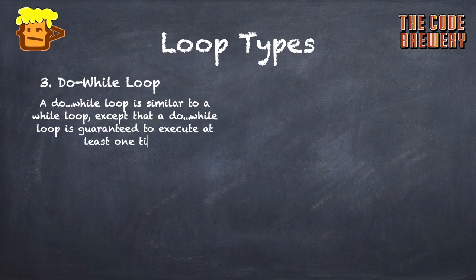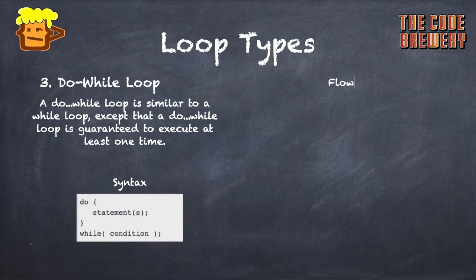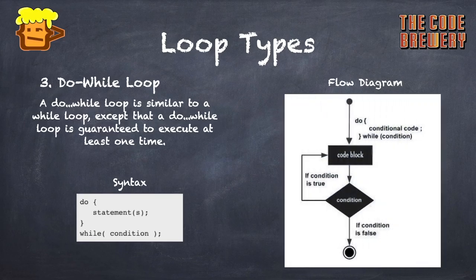The third type of loop is the do-while loop. A do-while loop is similar to a while loop except that it is guaranteed to execute at least one time. As we can see from the syntax, 'do' is written at the start with no condition, then we write the code to be executed, and then the while condition is taken at the end. It will loop at least once even if the condition is false.